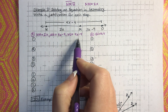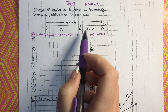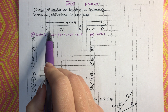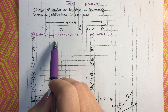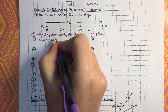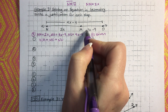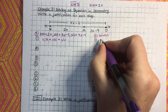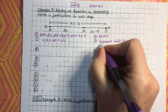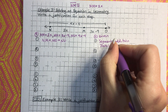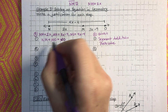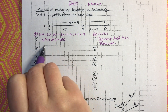Now that we have all our given information written down, we can use the segment addition postulate. When you're doing proofs, you have to write it using symbols. So we write NM plus MO equals NO — this piece plus that piece equals the whole. That is the segment addition postulate, and you need to write it exactly like this.